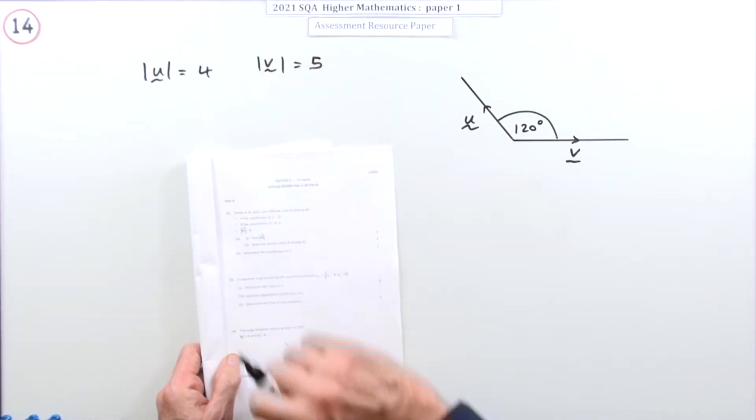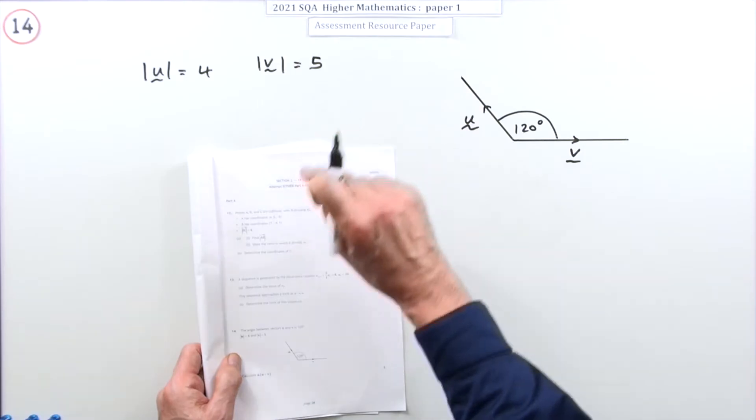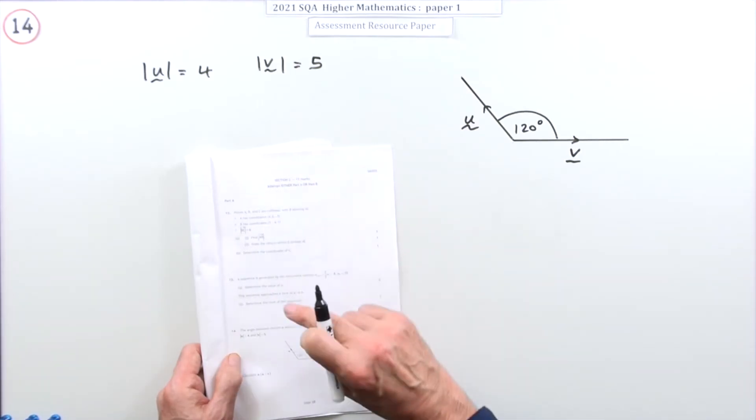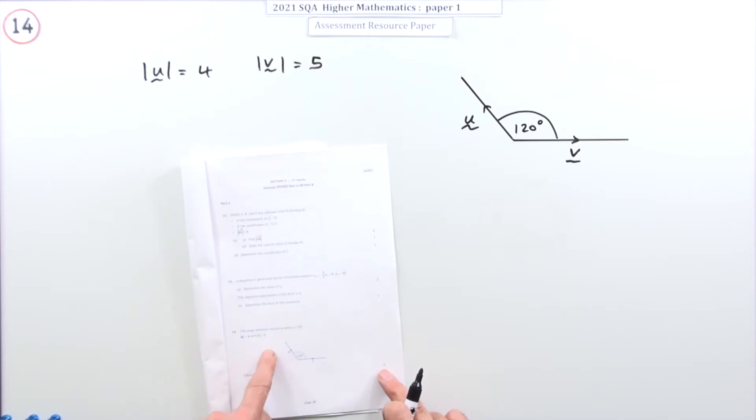Number 14 from Paper 1 of the 2021 Higher Maths Resource Paper, Section 8, the one with the vectors and the angle. Back to vectors here. Three-mark question, scalar product.